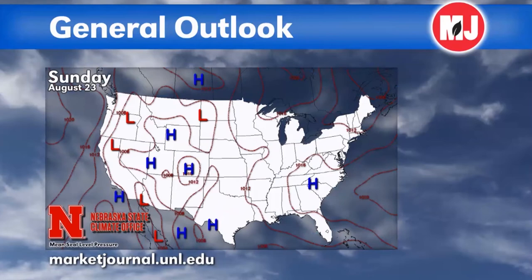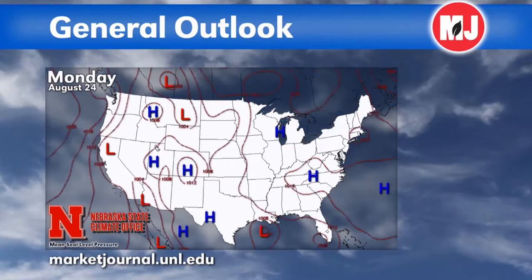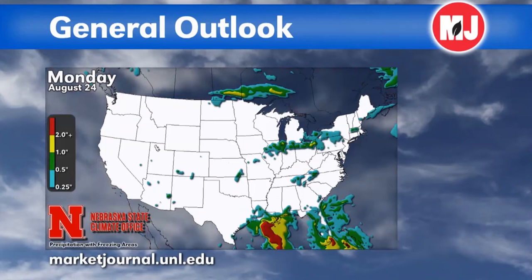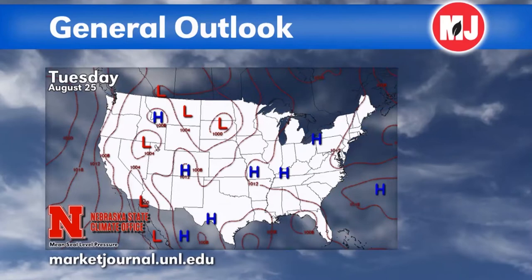By Monday, the ridge really expands and we may see more widespread 100-degree readings out west and upper 90s across parts of south-central Nebraska. Low pressure at the surface develops in eastern Montana, but there's no moisture to bring northward, so we're going to be dry. On Tuesday, a trough pushing in from the Pacific Northwest will start to flatten the ridge somewhat, cooling temperatures by a degree or two, but we're still looking at hot and dry conditions with no precipitation in sight.